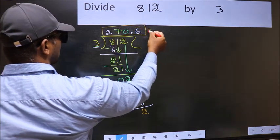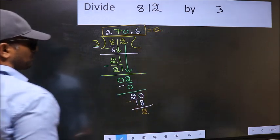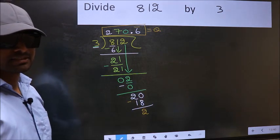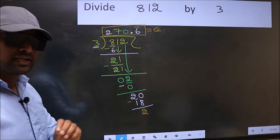So this is our quotient. Did you understand where the mistake happens? You should not do that mistake.